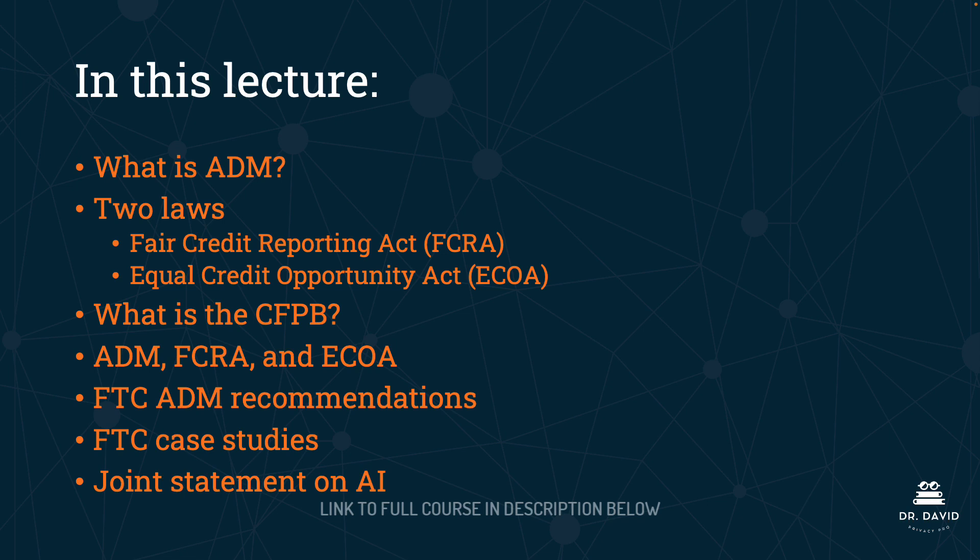We will start by defining what automated decision making is, then look at those two laws, and define what the CFPB is. We will look at the intersection of ADM, FCRA, and ECOA, then examine the FTC's recommendations concerning automated decision making. We will also look at a couple of recent FTC case studies, and conclude with a joint statement by a number of different federal agencies on AI.